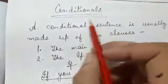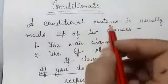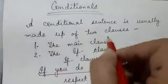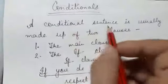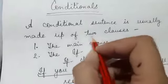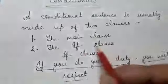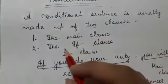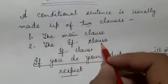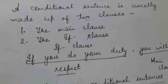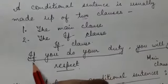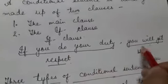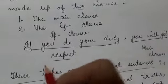Conditionals kya hoti hai? A conditional sentence is usually made up of two clauses. Jo conditional sentence hota hai, woh two clauses se bana hota hai. First one is the main clause and second one is the if clause. For example: If you do your duty, you will get respect.